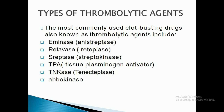The most commonly used clot-busting drugs, also known as thrombolytic agents, include anistreplase (also known as anistreplase), reteplase, streptokinase, TPA (tissue plasminogen activator), TNKase (tenecteplase), and urokinase. These drugs are available in the market under different trade names by different manufacturing companies and are used especially in emergency conditions like clot formation at the level of blood vessels.